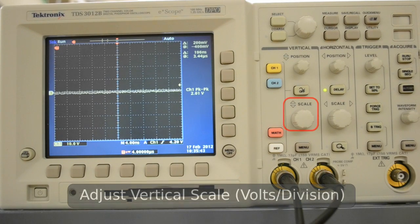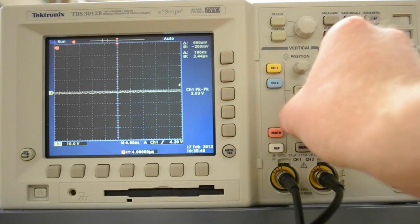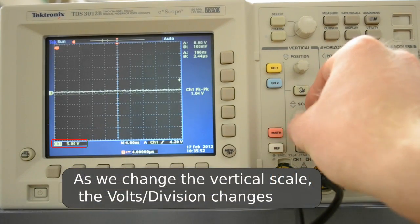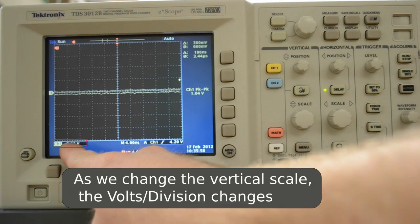To have a clearer view of the signal, let's adjust the scale on the oscilloscope. I'll start with the vertical scale and adjust that with these lower knobs. Notice as I'm changing the knob, the voltage per division is changing also.